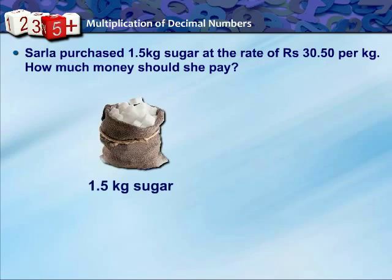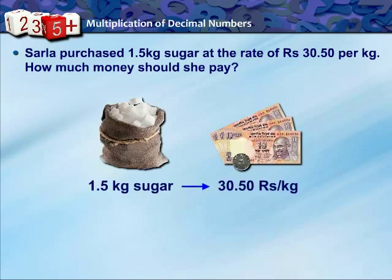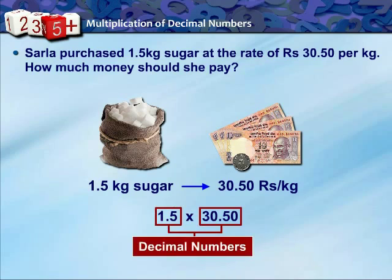Sarla purchased 1.5 kg sugar at the rate of Rs. 30.50 per kg. How much money should she pay? To calculate this, you need to multiply 1.5 into 30.50. Here both the numbers are decimal numbers. So, we have come across a situation where we need to know how to multiply two decimals. Let us now learn the multiplication of two decimal numbers.